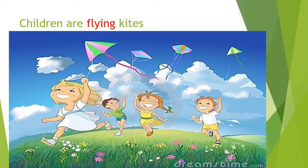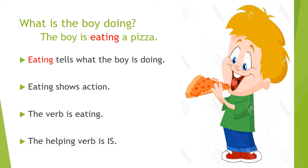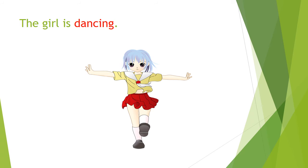You have to put the question to the noun: what are they doing? Then you will get the answer — flying. Now what is this? Your favorite, and my favorite too! The boy is eating a pizza. So what is the action word? Eating. Eating tells what the boy is doing — eating shows the action.